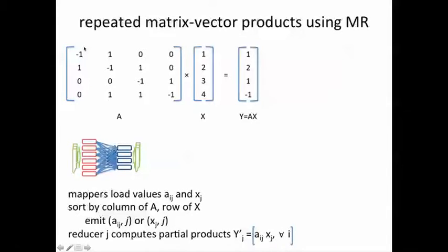So it will compute everything for this column multiplied by the first element of X. Similarly, reducer number 2 will compute all the multiplications of the second column with the second row of X, and so on.